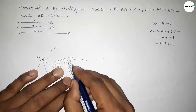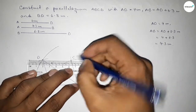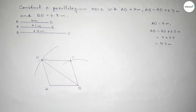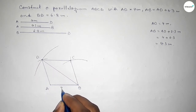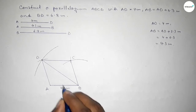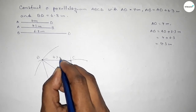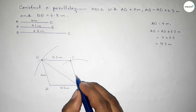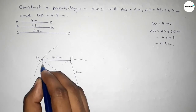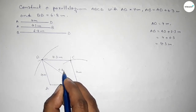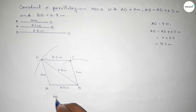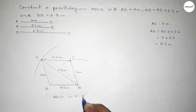Mark the intersection as point C. Now join D to C, and B to C. So ABCD is a parallelogram, with side AB = 4.3 cm and opposite side CD = 4.3 cm, and AD = 4 cm with BC = 4 cm, and diagonal BD = 6.8 cm.